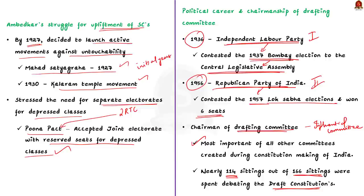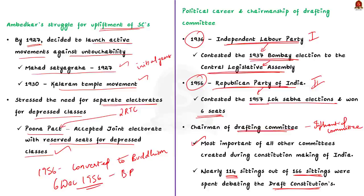In October 1956, just before his death, Ambedkar converted to Buddhism with the majority of his followers. Finally, Ambedkar died on 6th of December 1956. Through this discussion we learned some important points regarding Ambedkar. These points you can directly utilize in your mains answers. Whenever you are asked about the roles of Ambedkar, you can place these points to enhance your answers. Now let's move on to the next news article discussion.